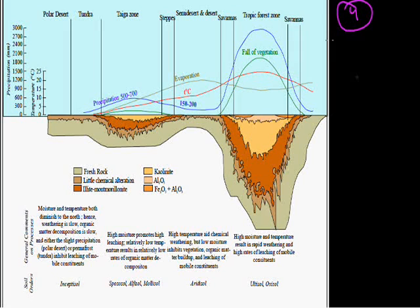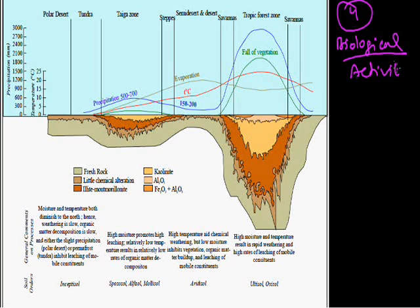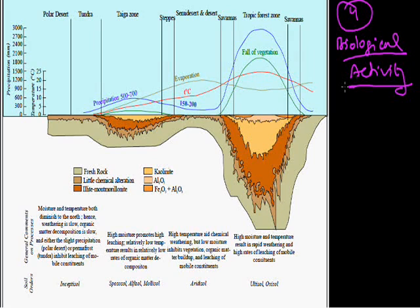The fourth factor is biological activity. Biological activity is also one of the important factors in the making of soil. As you know, the upper part of the soil is humus, which is an organic part. Let's understand this with the help of a diagram.